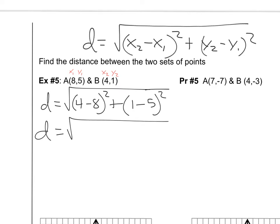So let's just work this out. 4 minus 8, that is negative 4 squared, plus 1 minus 5, that's also negative 4 squared. Square root, 4 squared is, negative 4 squared is positive 16, plus another 16.